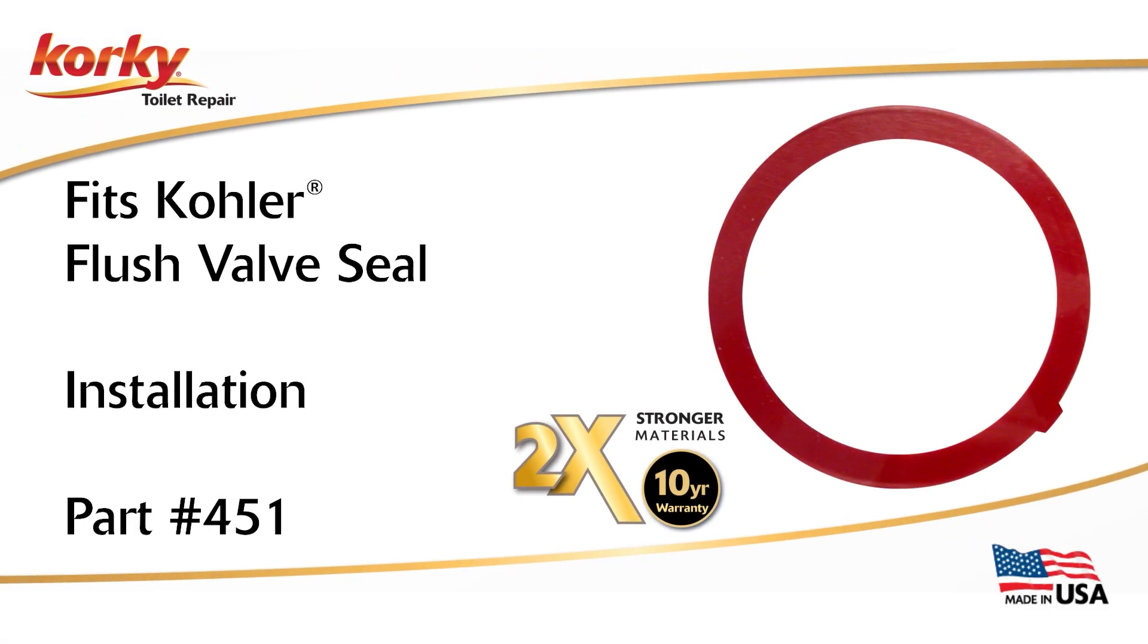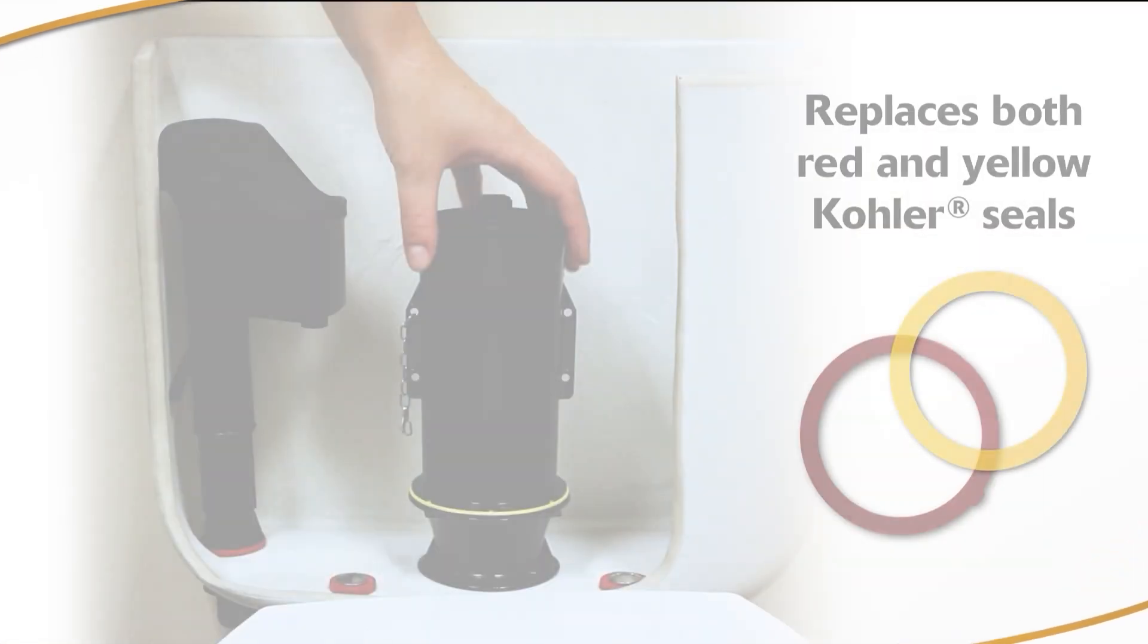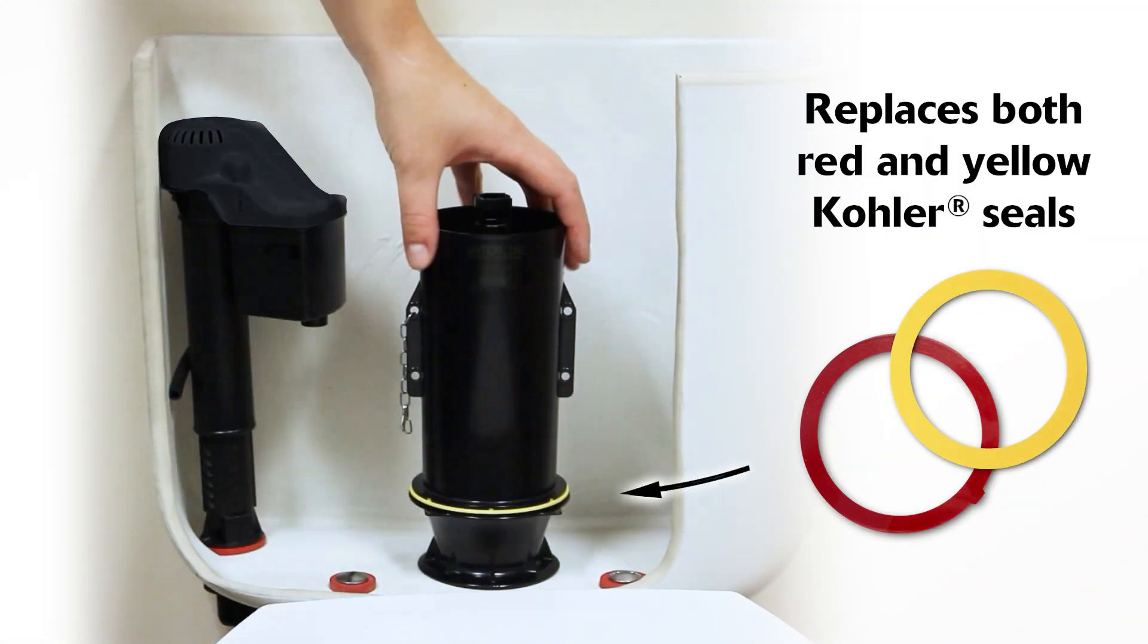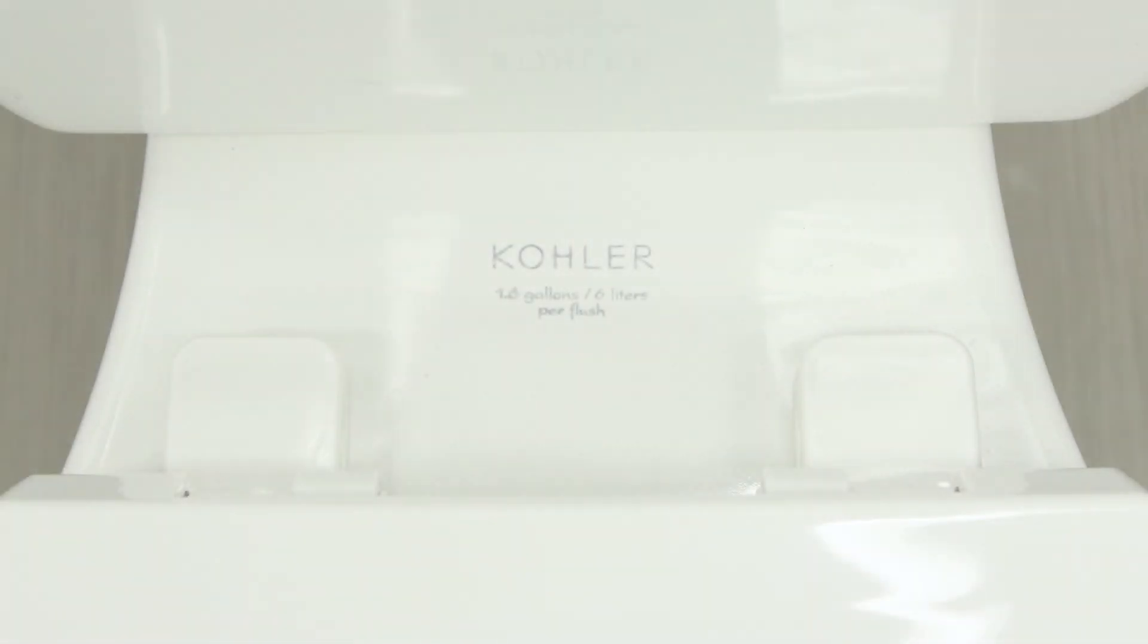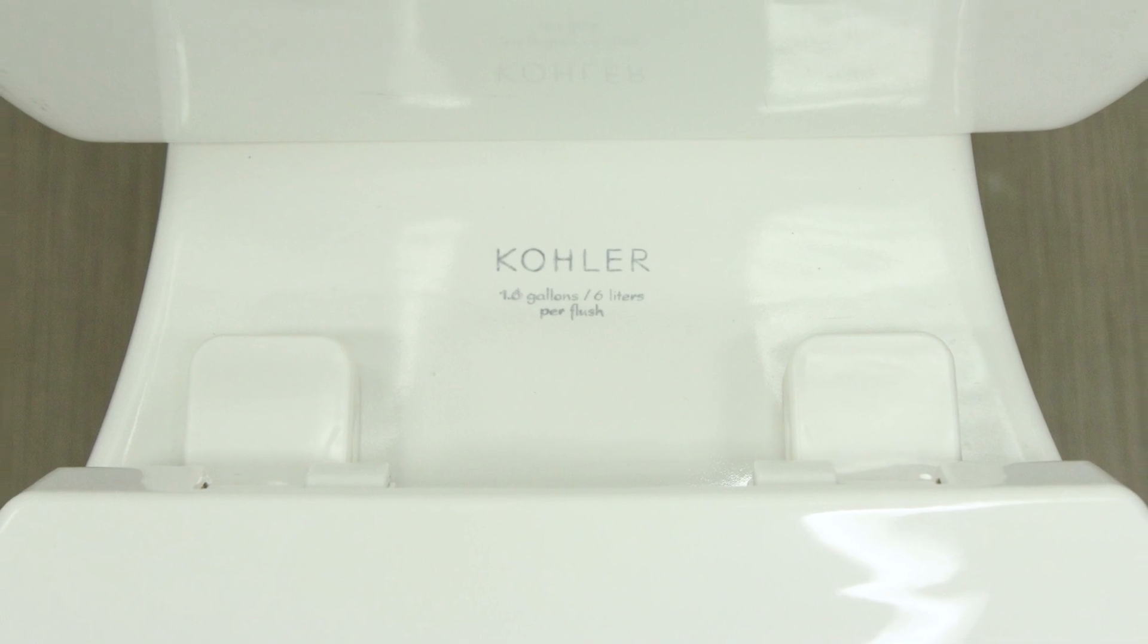This video will show you how to install the Corki long-lasting 2X Kohler seal. This seal is only compatible with tower style Kohler brand toilets. The toilet brand can be found between the tank and seat.